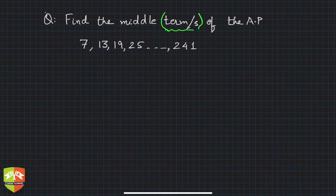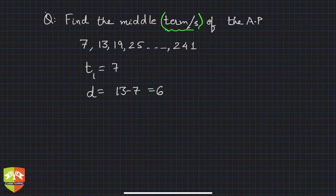Now what is the AP? It's given 7, 13, 19, 25...241. Let's write the basics. What is t1? t1 is 7. And what is d? Common difference is 13 minus 7, that is 6. Check whether this 6 is the common difference everywhere. Yes, looks like it.